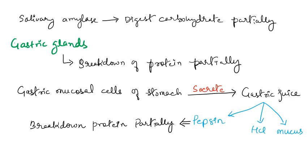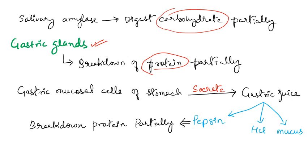Next comes the gastric gland. Gastric glands present in the stomach help in the partial breakdown of protein. So in the mouth there is partial breakdown of carbohydrates, and in the stomach there is partial breakdown of proteins. Gastric glands produce gastric juices, which include pepsin, HCl, and mucus. Pepsin helps in the partial digestion of proteins.